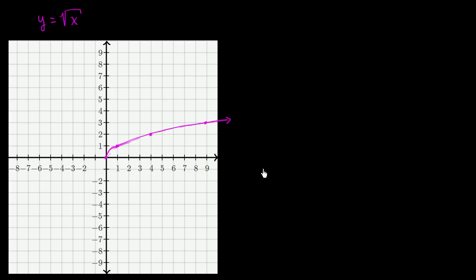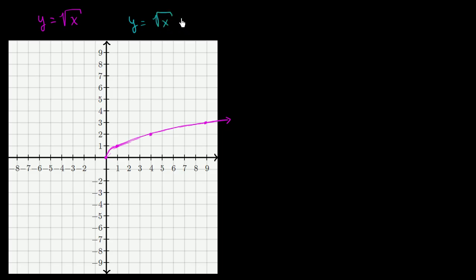Now let's think about what happens if we wanted to shift it in some way. Let's say we wanted to shift it up by 4. Whatever value we're getting, we want y to be 4 higher, so we could just add 4 to it. That gives us y equals the square root of x plus 4.